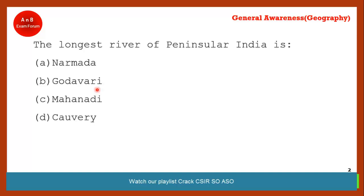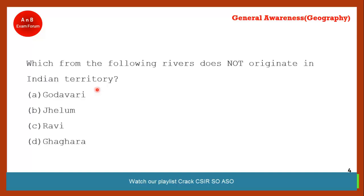Can you name the origin of river Godavari? Yes, you are right — it is Nasik, in Maharashtra.